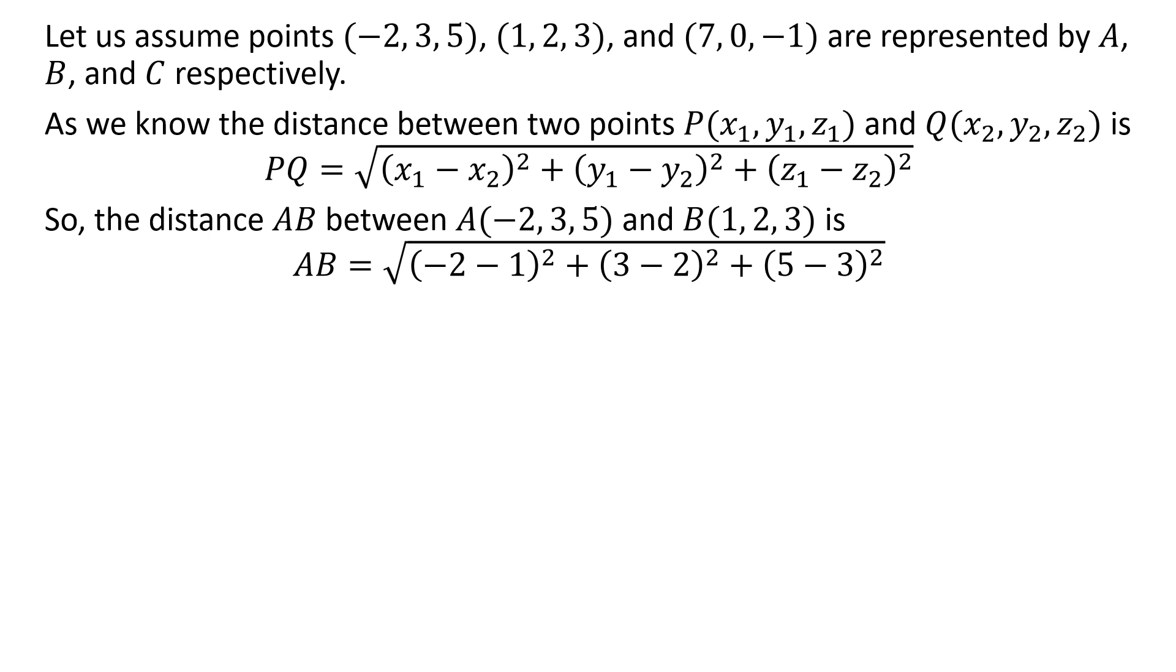So, the distance AB between the points A(-2, 3, 5) and B(1, 2, 3) is equal to the square root of (-2 - 1)² plus (3 - 2)² plus (5 - 3)². Further simplification gives us the distance AB is equal to the square root of (-3)² plus 1² plus 2². Evaluation gives us the distance AB equals √14.